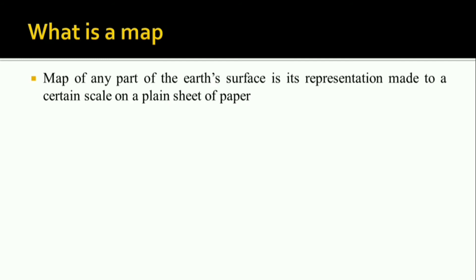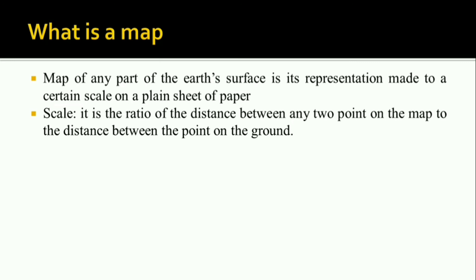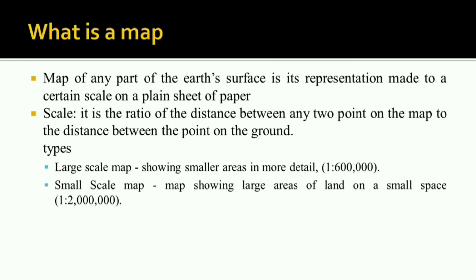The next question is: what is a scale? The scale is the ratio of the distance between any two points on the map to the distance between the same points on the ground surface. For example, if you hold a map and measure the distance between two buildings as 2 to 3 centimeters, and the actual distance is 50 meters, then the scale is 2 centimeters to 50 meters — that ratio is called the scale. There are two types of scale: a large scale map, which shows a smaller area in more detail, and a small scale map, which shows a large area in a small space. For example, a Tamil Nadu map is a large scale map, while an India map is a small scale map.